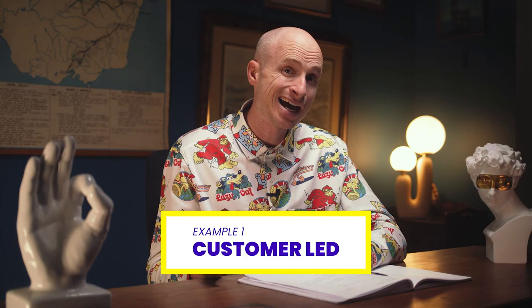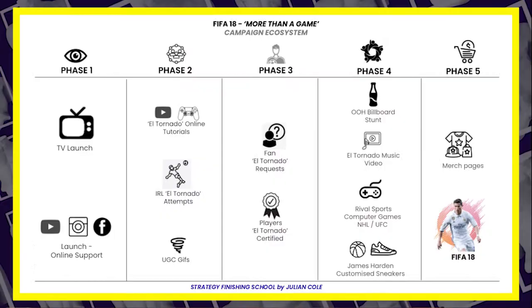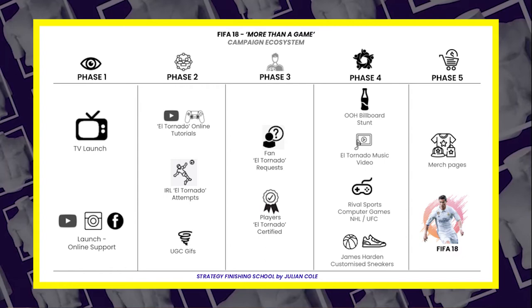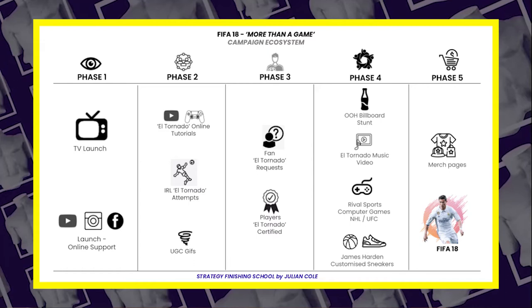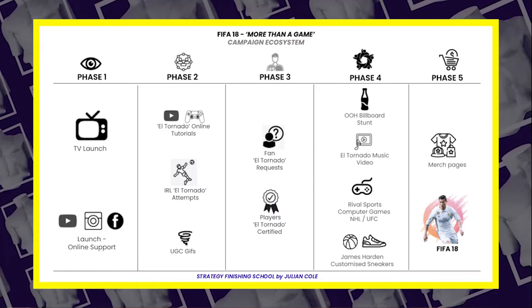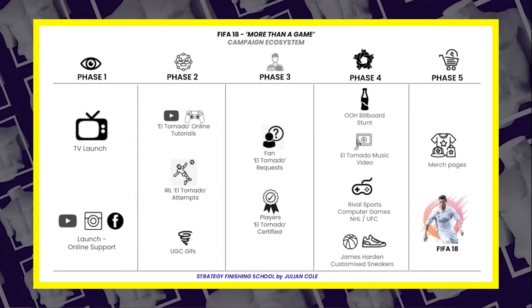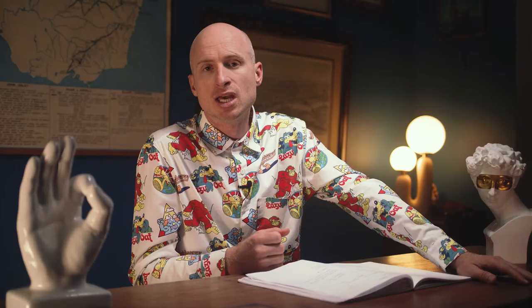Let's start with a customer-led approach, which is typically linear as it tends to be a path to purchase. In this example, we see the linear steps and phases, starting with the TV launch and support media to audience participation, to campaign influencers, and finally the end goal of purchasing the product. While this shows the logical steps, it doesn't accurately show when some of the other phases might come into play. For example, some of the phase four cultural media might have been executed in line with phase two, the audience participation phase, driving wider awareness with a direct-to-purchase on the merchandise page on the FIFA 18 site, as seen in phase five. But currently it appears that phase four only happens after phase two and three.